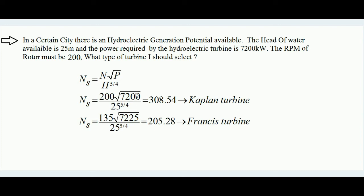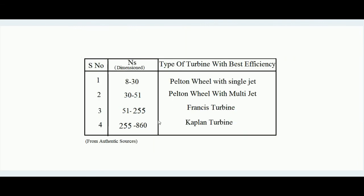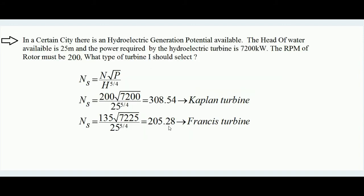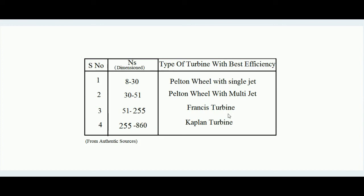For a second example at the same site: suppose the required power is 7225 kilowatt, the required RPM is 135, and head is still 25 meters. Putting these values in the specific speed formula gives ns = 205.28. This value falls between 51 and 255, which is the range for Francis turbine — so Francis turbine should be selected for this condition.